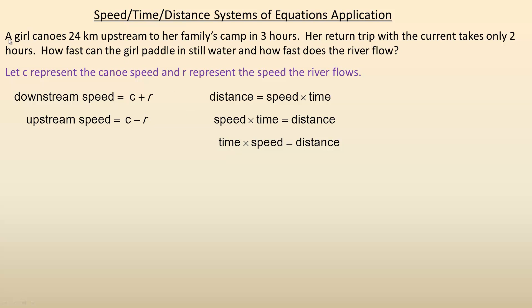So the first sentence - a girl canoes 24 kilometers upstream to her family's camp in 3 hours. 3 hours is the time, so we put a 3 at the beginning, multiplied by her speed. Her speed would be the C - R expression because she is going upstream. This trip took longer because she is going against the current. The distance equals 24.